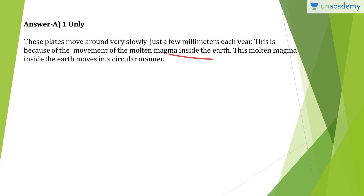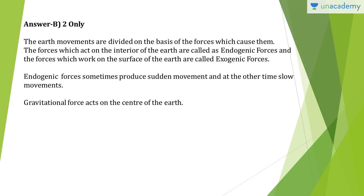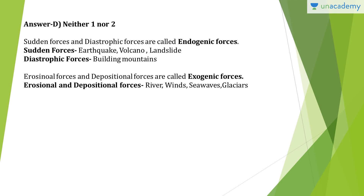Question 25: The place in the crust where movement starts is called the focus — correct. The place on the surface above the focus is called the epicenter — correct. Seismic waves radiate outward in all directions — correct. Answer is C, all one, two, three. The lithospheric plates move, the earth's surface vibrates, and these vibrations travel around the earth as earthquakes, outwards from the epicenter as waves. Question 26: Greatest damage is usually closest to the epicenter — correct. The strength of the earthquake increases away from epicenter — wrong, it decreases. Common earthquake predictions include studying animal behavior, fish getting agitated, snakes coming to the surface. Answer is B, one and three.